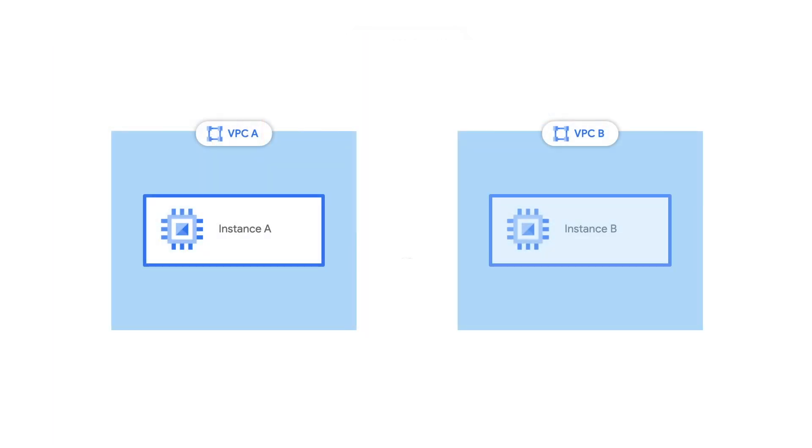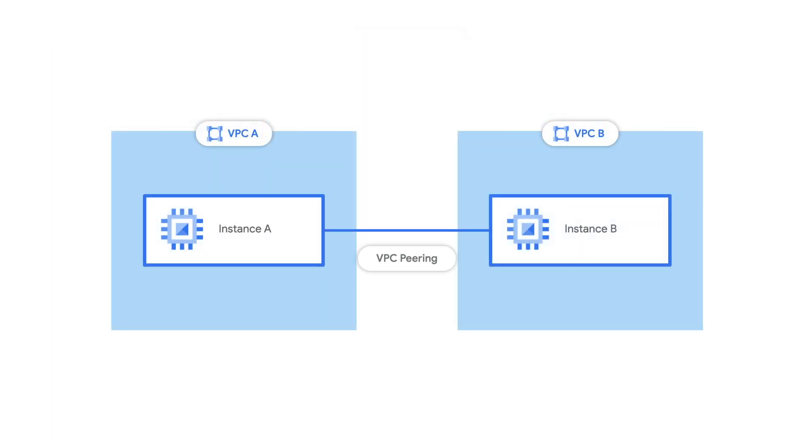You can also use VPC peering to connect multiple VPCs across many different projects or organizations. The next question is, once you have a VPC, how do we connect it to your on-premises existing environment?